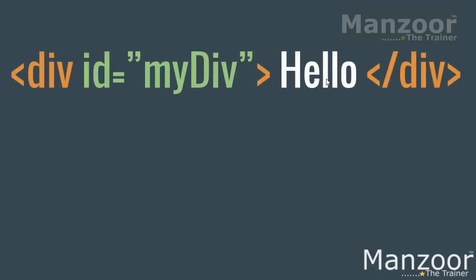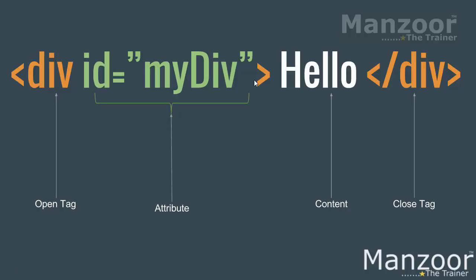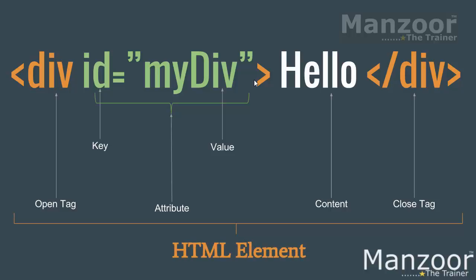As we have seen, everything is a tag in HTML. Let us understand some terminologies used in web development. Taking the example of a div tag, we have an open tag, the content, and a close tag. Inside the tag or angle bracket you can see 'id equals my div' — this is called an attribute. A key-value pair makes an attribute: ID is the key, my div is the value. This complete thing is your HTML element.